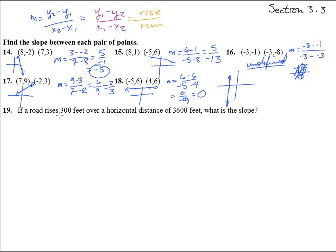Number 19. If a road rises 300 feet over a horizontal distance of 3,600 feet, what is the slope? The slope, now we don't have points, but it gives us the rise and the run. That was nice.